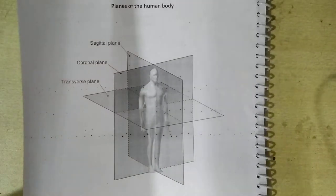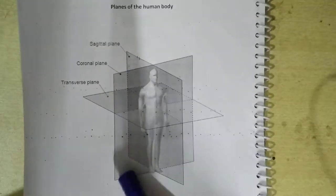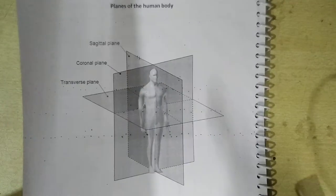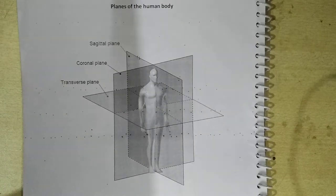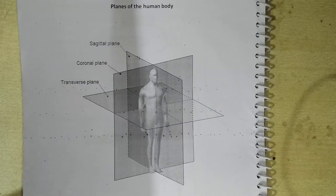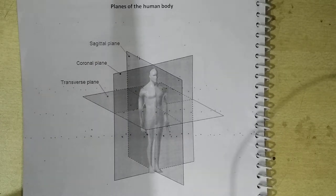Now what is the next plane? This is the coronal plane. Coronal plane is also a vertical plane which passes through the body and divides the body into a front half and the back half. They are unequal halves. So coronal plane is a vertical plane that passes through the body and divides it into an anterior and a posterior half — both unequal halves.